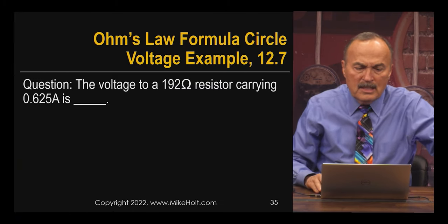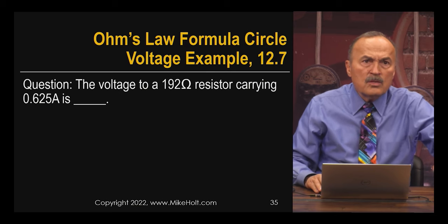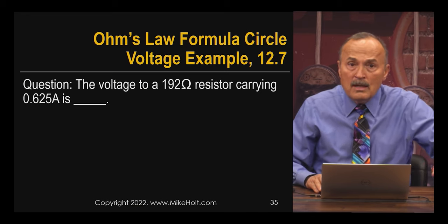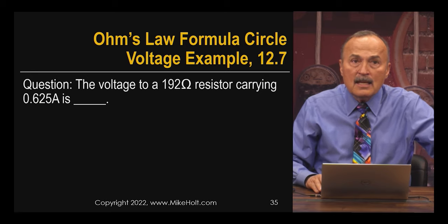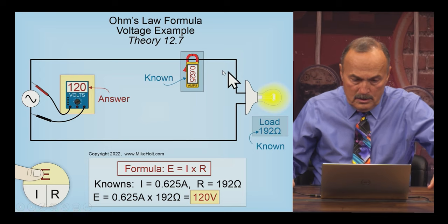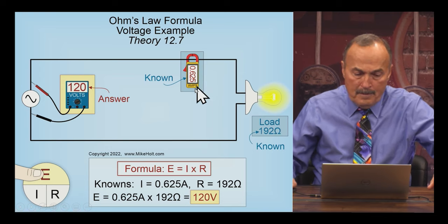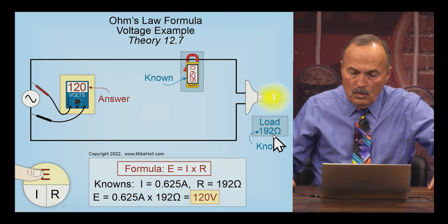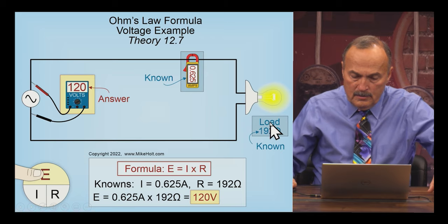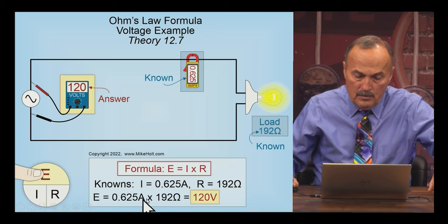So again, not a big deal. Here's just an example of a question. Hey, what's the voltage to a 120, 192 ohm resistor carrying 0.62? So the question here is, what's the question? The question is what? What's the voltage? Which means E, electromotive force. And then you put your finger over E, you have the current. The current is 0.625 amperes. R, the resistance of the load, we're ignoring the resistance of the wires in this example here, 192 ohms. Well, then E is equal to I times R. I is known, given. R is known, it was given, then just do the math. I times R, 120 volts.